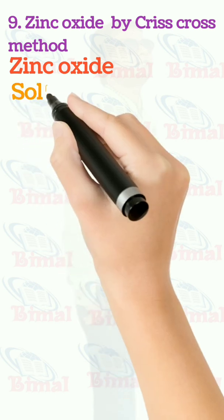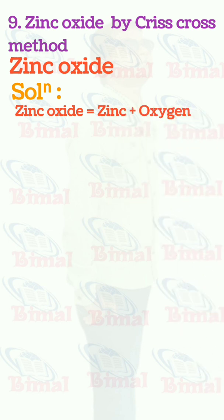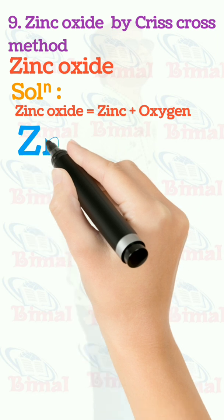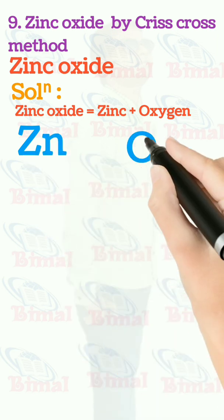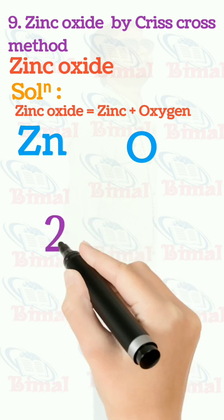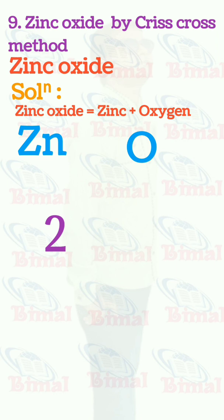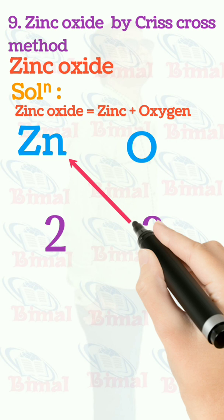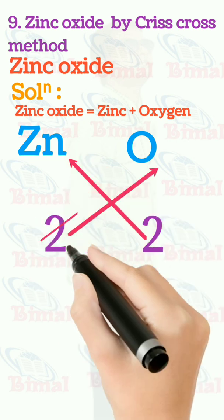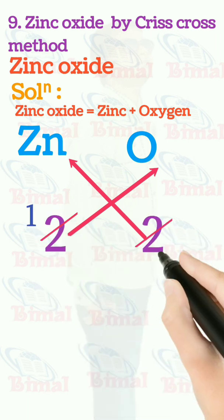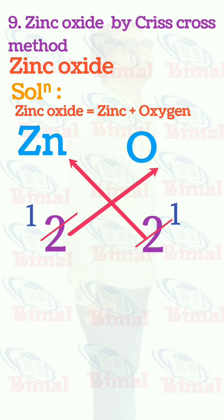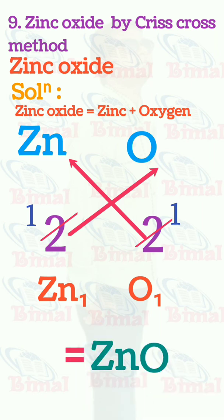Molecular formula of zinc oxide by criss-cross method. Zinc oxide is equal to zinc plus oxygen. Symbol for zinc is Zn, symbol for oxygen is O. Valency for zinc is 2, valency for oxygen is 2. When we do criss-cross, before exchanging we cancel: 2 divided by 2 gives 1 on each side. So we get Zn1 and O1, which is equal to ZnO. In the molecular formula we don't write valency 1, so the molecular formula of zinc oxide is ZnO.